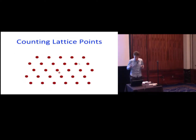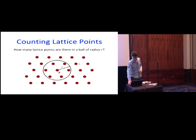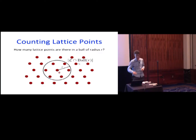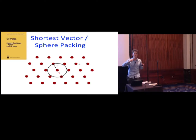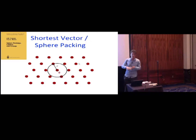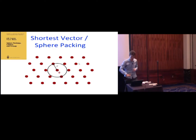The basic question in this area is counting lattice points. Gauss already thought about that. Basically you take a lattice, you have a ball of some radius r, and you're asking about the number of points in this ball. This is the most basic question that many of these problems are around. A special case is the shortest vector problem or the sphere-packing question, which asks for the largest ball containing no non-trivial lattice point.